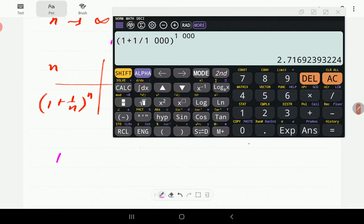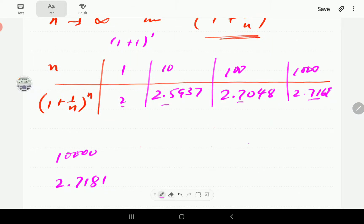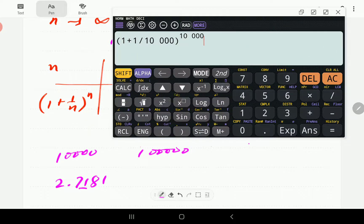Suppose we now have n is 10,000. The value is now 2.7181. Now 7, 1 is not changing. Suppose n is now 100,000. And this is now 2.7182.